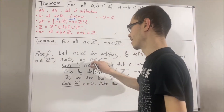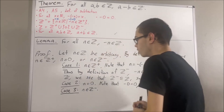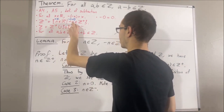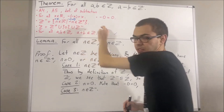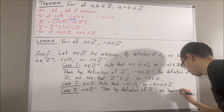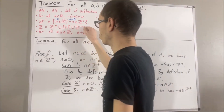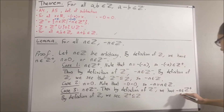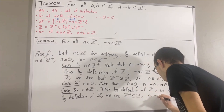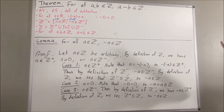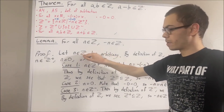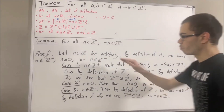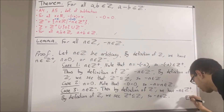Now let's move on to our final case, where n is a negative integer. By definition of the negative integers, since n is a negative integer, this tells us that n is a real number such that negative n is a positive integer. So, negative n is a positive integer. By definition of the integers, every positive integer is an integer. So since negative n is a positive integer, this tells us that negative n is an integer. Putting this all together, we have shown that if n is any integer, then negative n is an integer. So we have proven exactly what we wanted to prove, and this completes the proof.